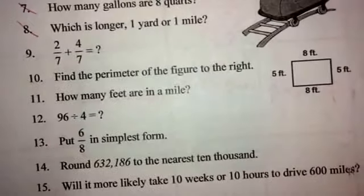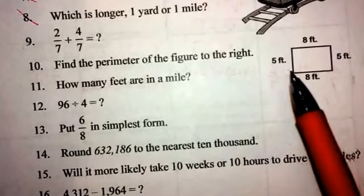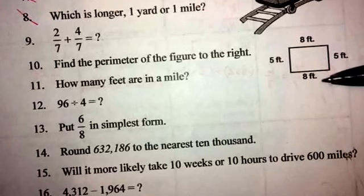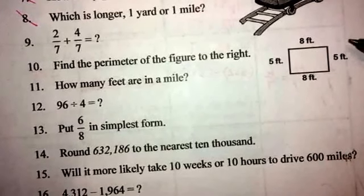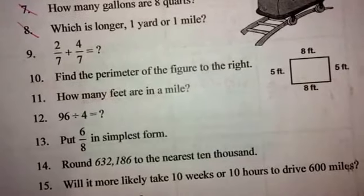Alright, number 10. We need to find the perimeter of the figure to the right, and we have a rectangle here, so we know that we have opposite sides that are equal. We have 8 feet with our length and 5 feet for our width. So I'm going to try to do this as a multiplication problem and then add my answers in the end.